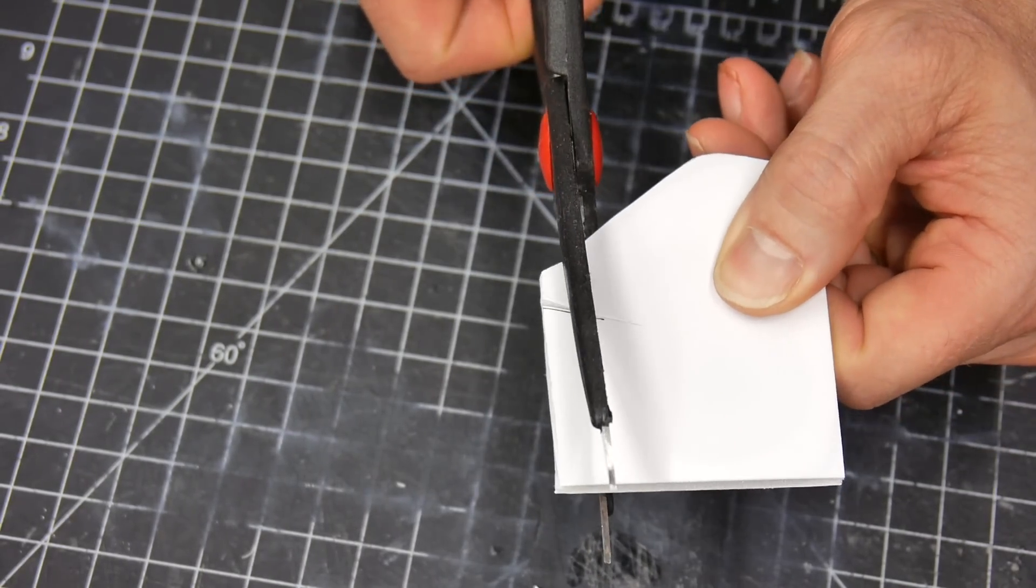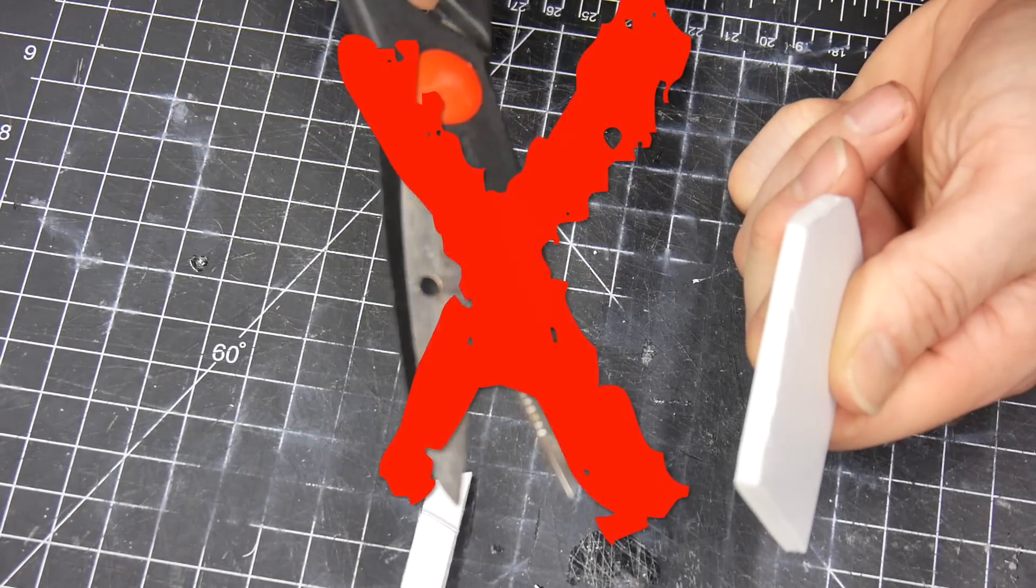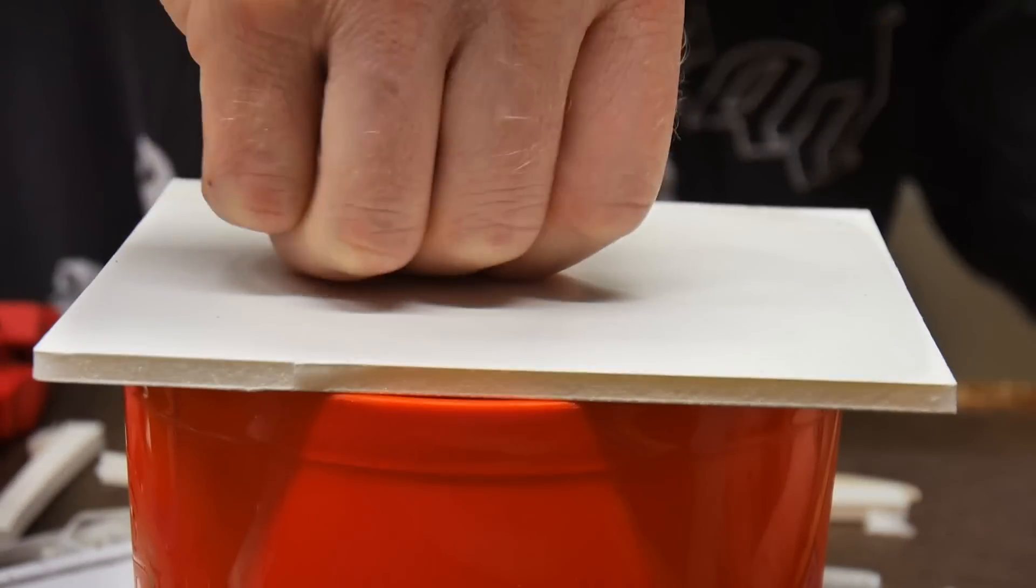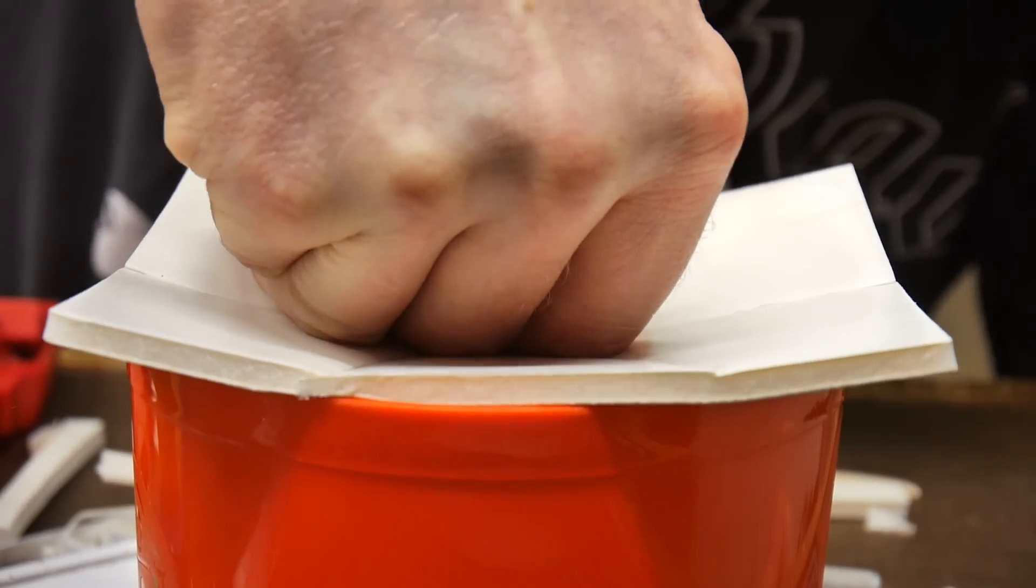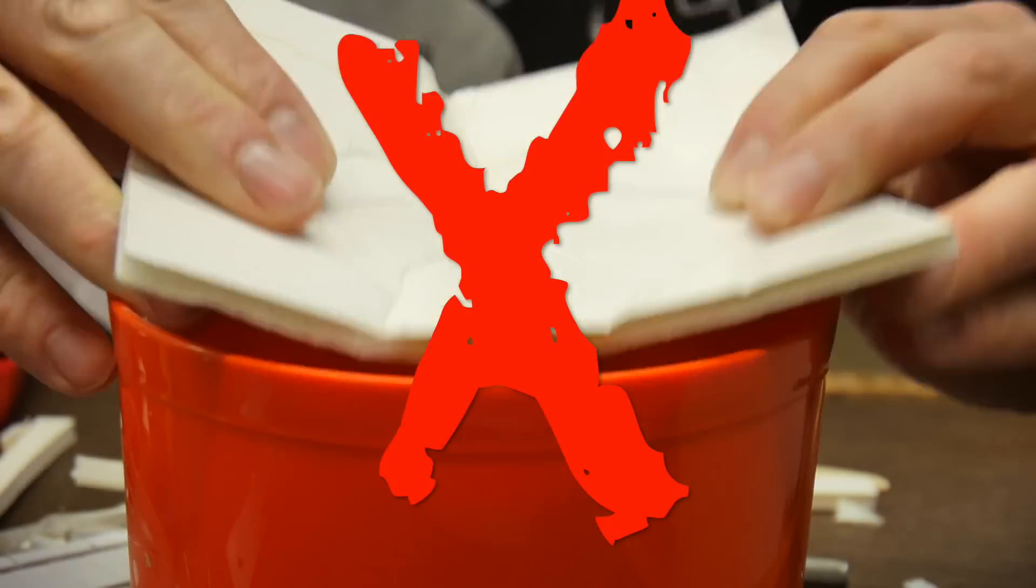You call yourself a designer or a maker and you're still cutting your foam core with a pair of scissors? Come on dude. You actually think this is how you make a compound surface with a piece of foam board? Seriously?